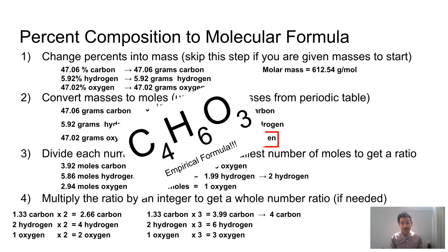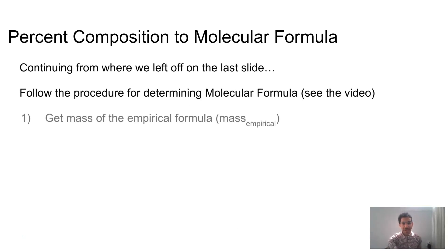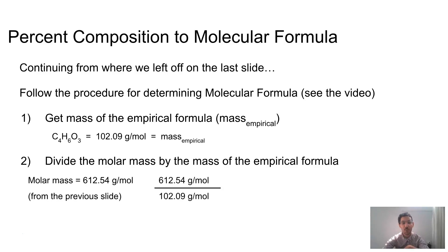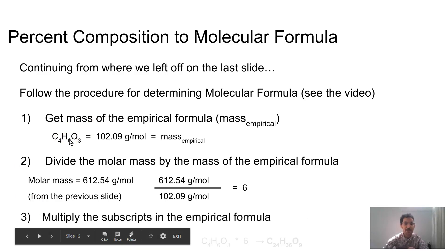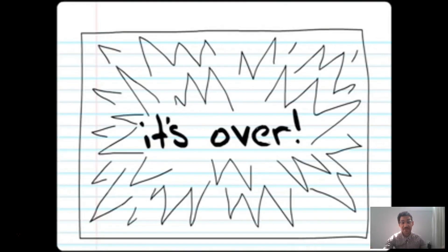Now we need to get the molecular formula. Using our empirical formula C4H6O3 and the molar mass of 612.54 from the previous slide, we get the mass of the empirical formula, then divide: 612.54 ÷ 102.09 = 6. So we multiply all subscripts by 6, giving us a molecular formula of C24H36O18.